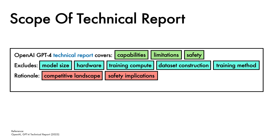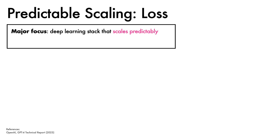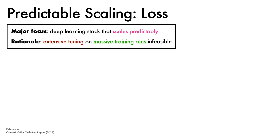The team note, however, that they are committed to independent auditing of their work. A major focus of the project was to build a deep learning stack that scales predictably with access to greater compute. The rationale behind this approach is that it becomes simply infeasible to do extensive tuning when the training runs get massive.